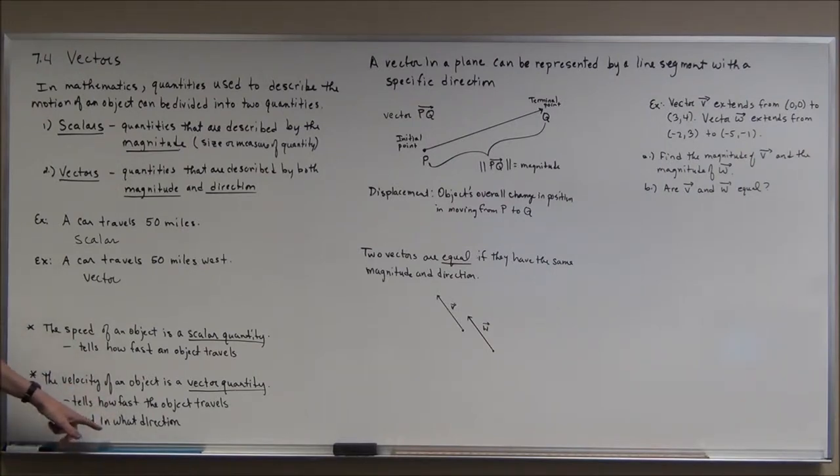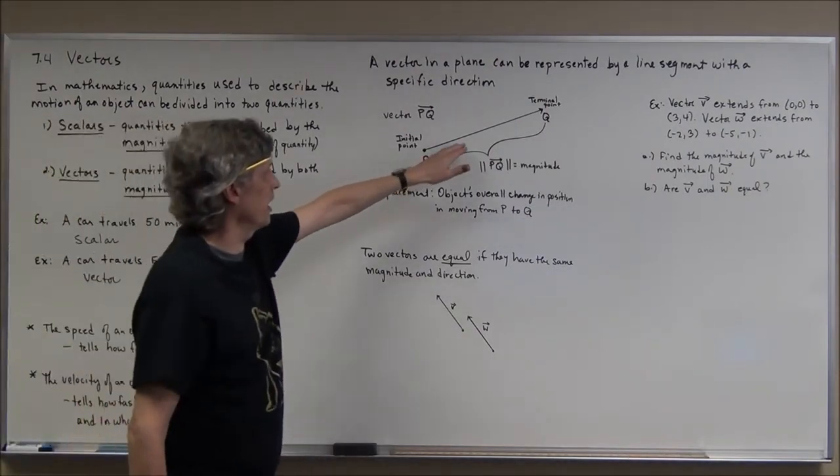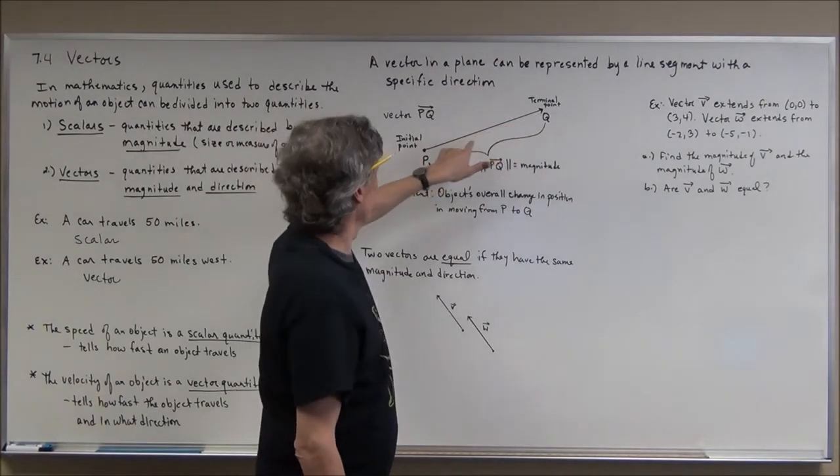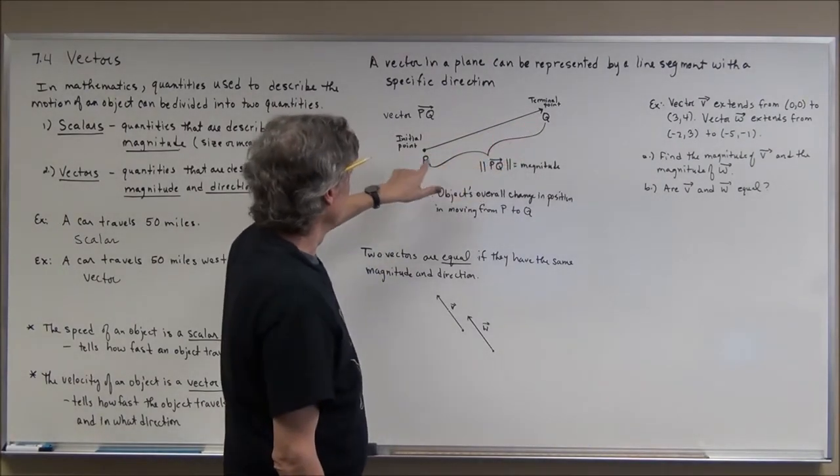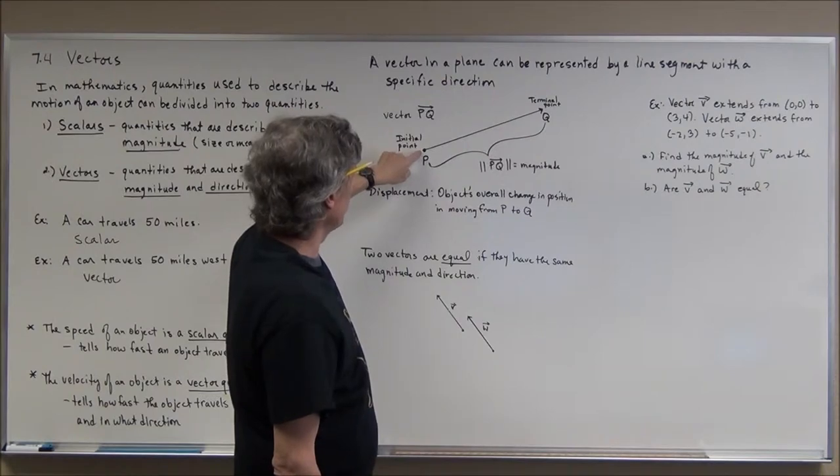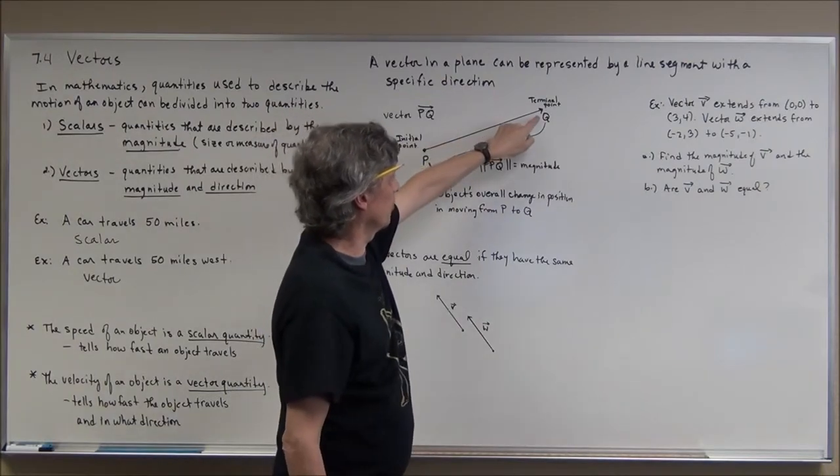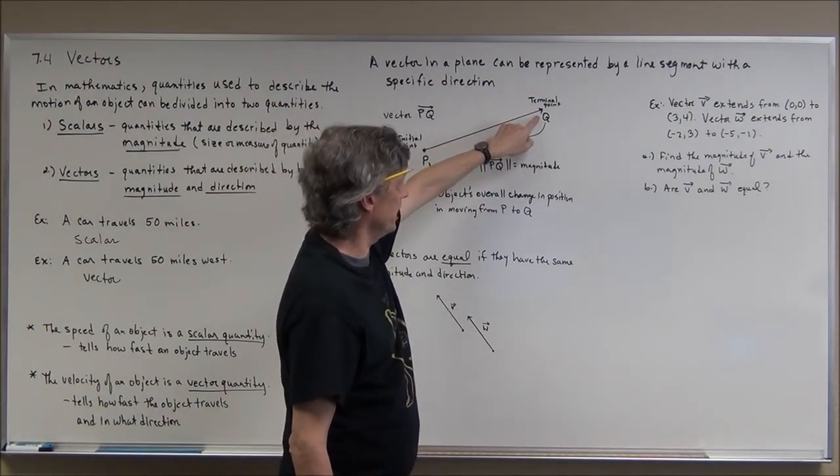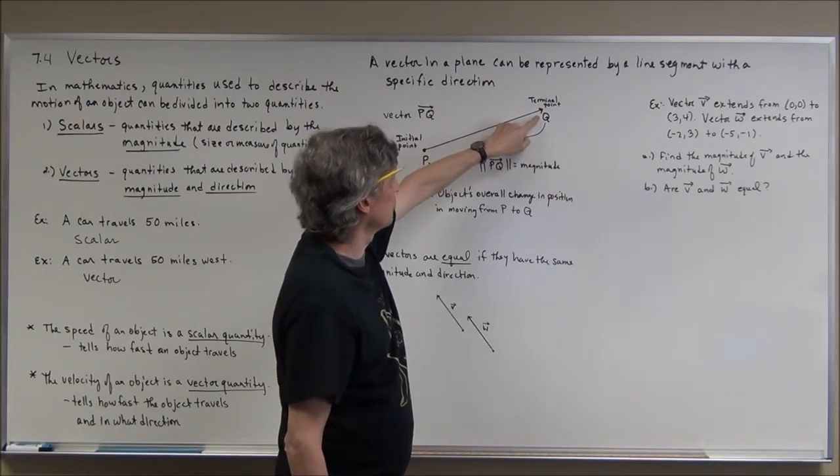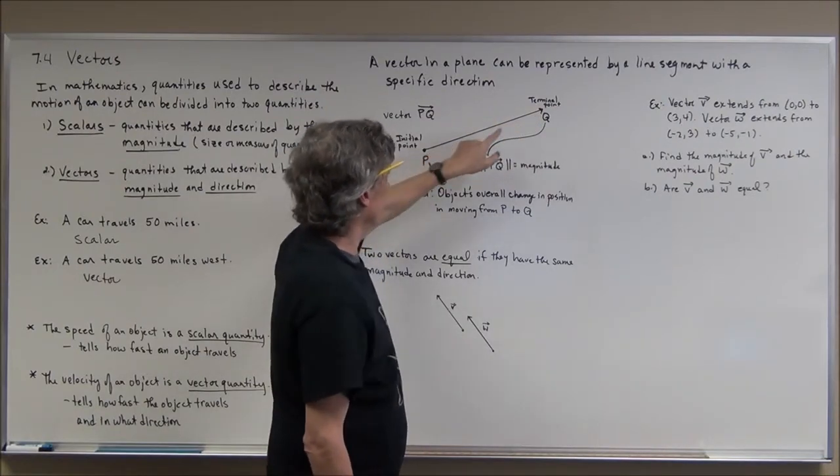To represent this on a plane with paper and pencil, we typically put a vector as a line segment that gives a specific direction. This is not a ray, this is a line segment. There's a starting point or initial point, but the arrow is there not to indicate that it goes on forever but that it gives the direction of this particular vector.